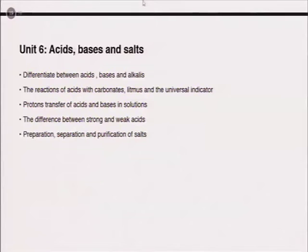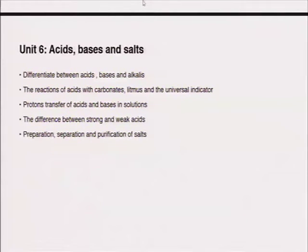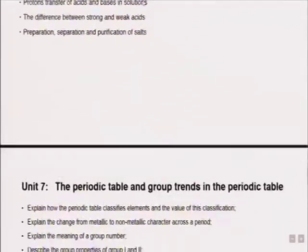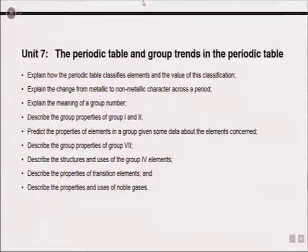Unit 6 looks at acids, bases and salts, which is very straightforward. Go back to your study guide and understand the differences between these three concepts, and also understand how the reactions of acids with carbonates, with litmus paper and with universal indicator work. You also need to understand how proton transfer occurs with acids and bases in solutions, differentiate between strong and weak acids, and understand how different salts are separated, prepared and purified.